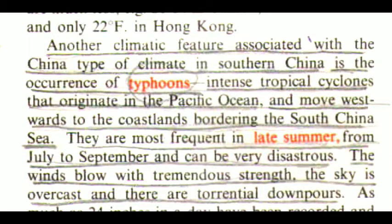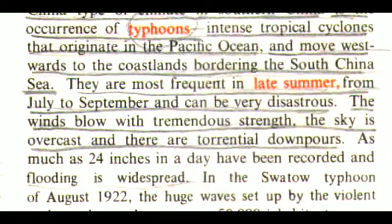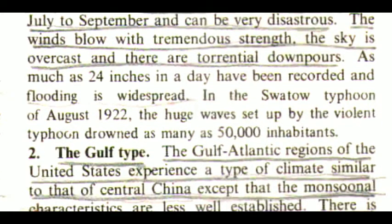Another climatic feature associated with the China type in southern China is the occurrence of typhoons — intense tropical cyclones that originate in the Pacific Ocean and move westwards to the coastlands bordering the South China Sea. They are most frequent in late summer from July to September and can be very disastrous. The winds blow with tremendous strength, the sky is overcast and there are torrential downpours — as much as 24 inches in a day have been recorded and flooding is widespread. In the Swatow Typhoon of August 1922, the huge waves set up by the violent typhoon drowned as many as 50,000 inhabitants.